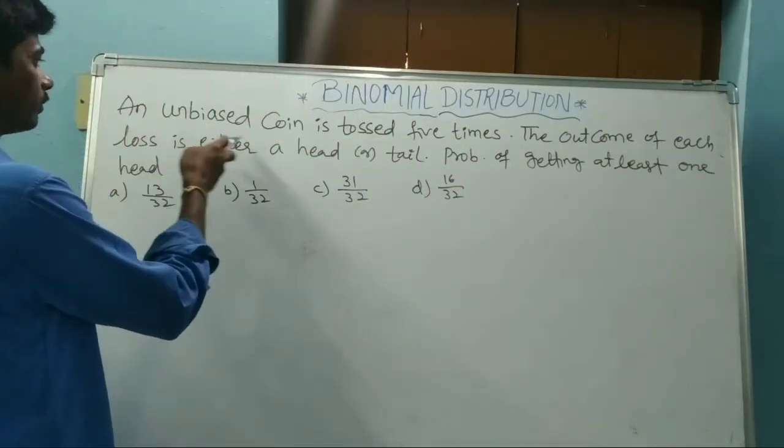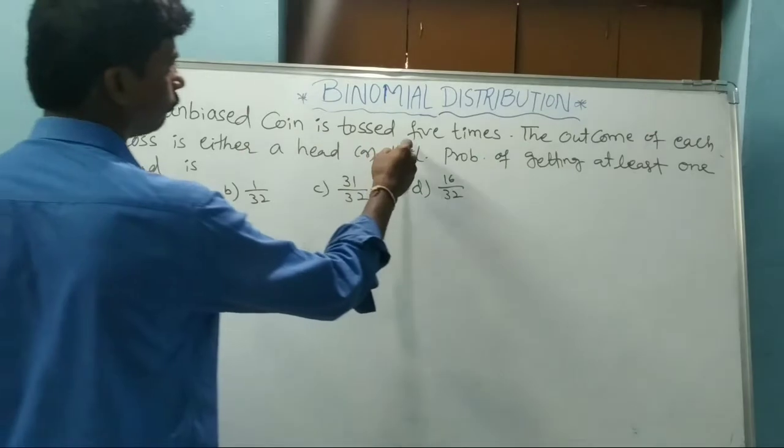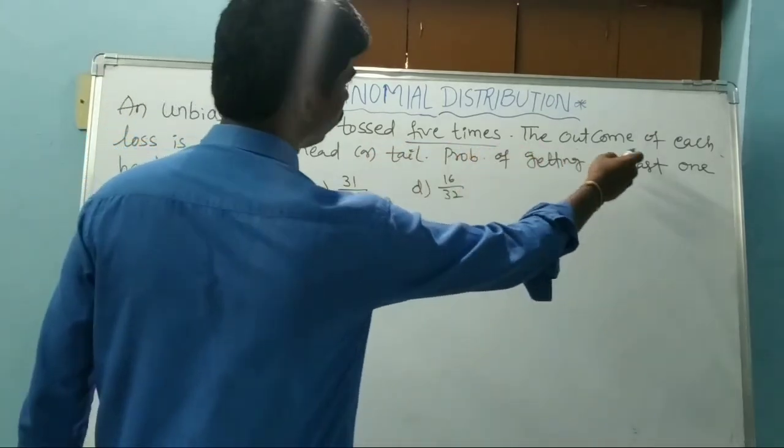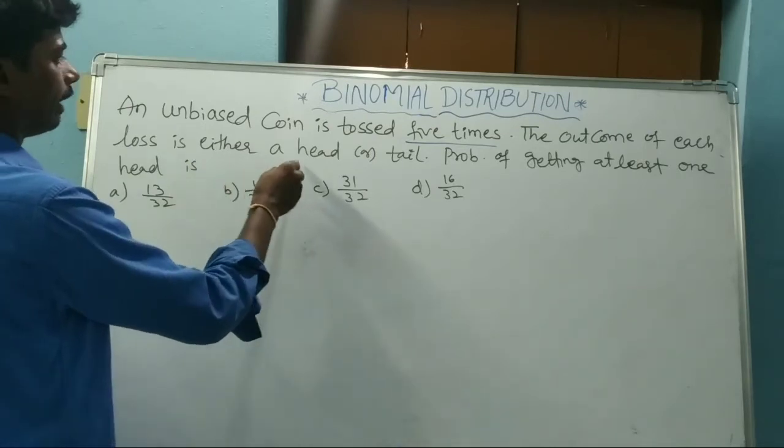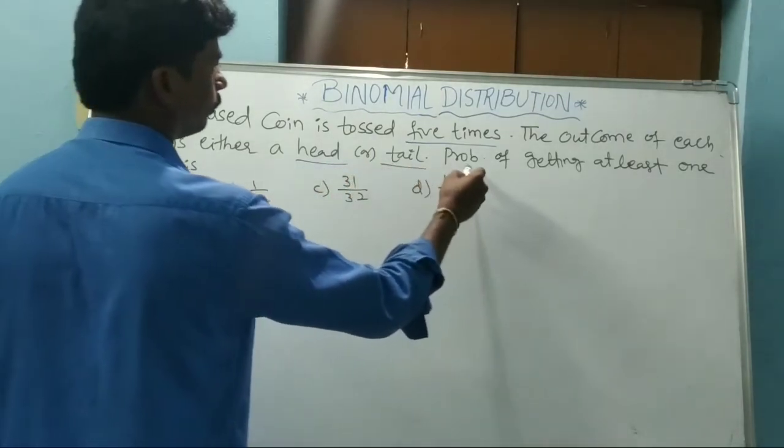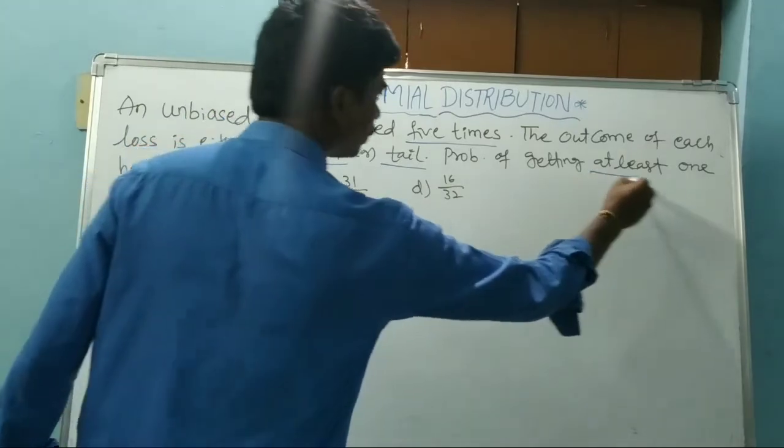An unbiased coin is tossed five times. The outcome of each toss is either a head or tail. Probability of getting at least one...